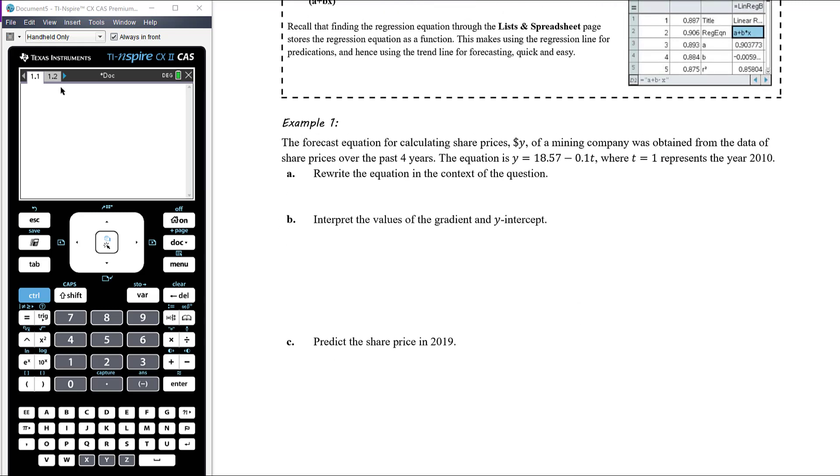Let's have a look at an example. The forecast equation for calculating share prices, which is Y dollars, of a mining company, was obtained from data of share prices from the past four years. The equation is Y, so the share price, is equal to 18.57 minus 0.1T, where T equals 1 represents the year 2010. It probably should specify that time period a bit better in the question. Rewrite the equation in the context of the question, so using variables, using the variables about the question.